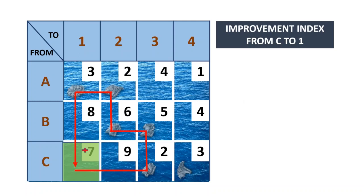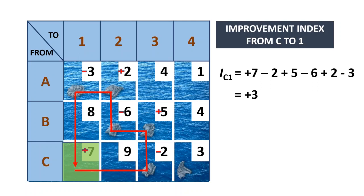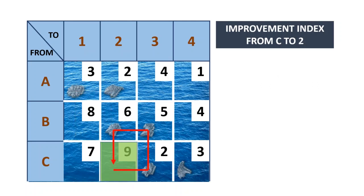For route C to 1, you start with plus on C1 — plus 7. Then you place alternating signs at each corner of the path: minus, plus, minus — only on the corners where direction has been changed. The improvement index is the sum of all those unit costs, which gives plus 3. This means it costs 3 more per unit, so if you add 10 units on route C to 1, the cost increases by 3 times 10, making it more expensive to allocate more units on that route.